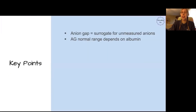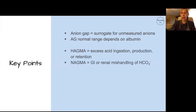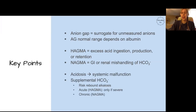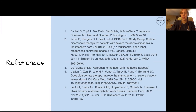Some big key points: The anion gap is simply a surrogate marker for unmeasured anions. The normal range depends on albumin and other lab factors, so use your lab's reference range and adjust for albumin. A high anion gap metabolic acidosis can come from excess acid ingestion, production, or retention. A non-anion gap acidosis can come from GI or renal mishandling of bicarbonate. Acidosis causes all sorts of systemic malfunctions, which is why we care so much. There are very few situations where you want to give supplemental bicarbonate due to various associated risks — only in severe acute anion gap metabolic acidosis, and routinely in chronic acidosis. Thank you so much for joining us on our very first episode of Decoding Physiology!